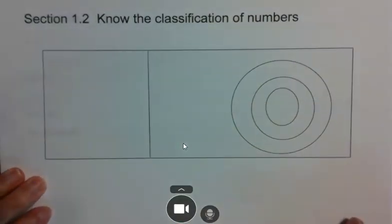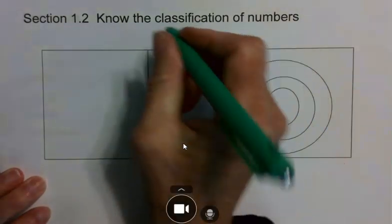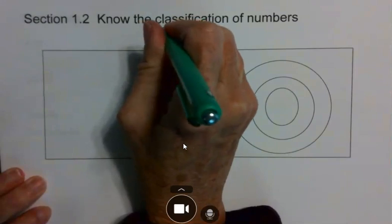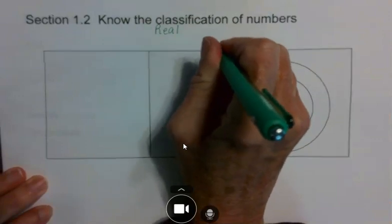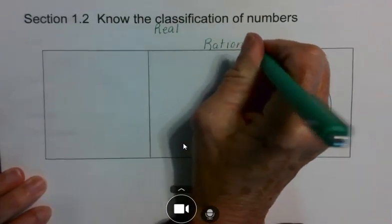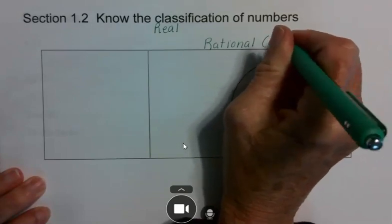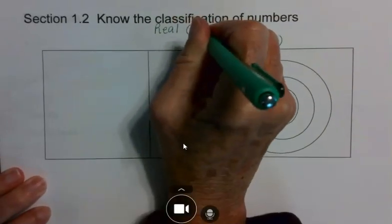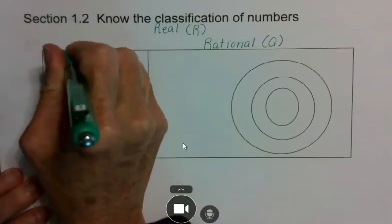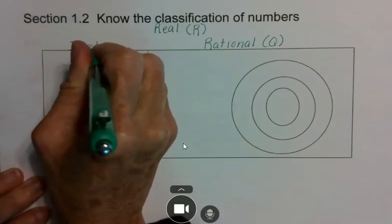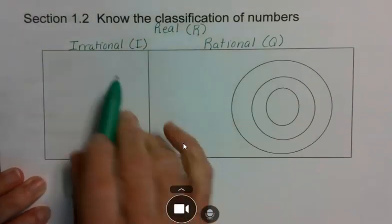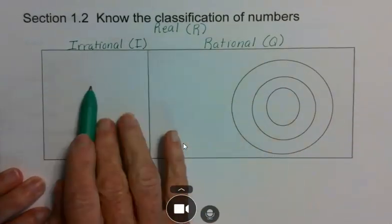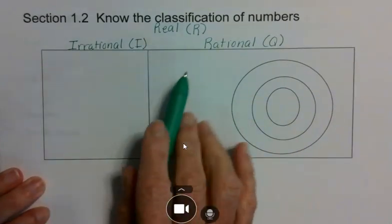In section 1.2, you need to know the classifications of your numbers. Remember, all the numbers that we've talked about up to this point are all called real numbers — abbreviation R. Within real numbers, you have rational numbers — abbreviation Q — and you also have irrational numbers — abbreviation I.